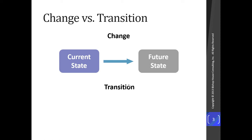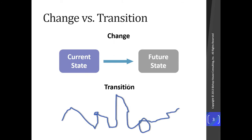When we talk about change, we're talking about moving from a current state to a new future state — it's very process-driven, often oriented with project management or training. Whereas when we talk about transition, it's much more emotional and not process-driven. We're talking about how people process and move through that change on a psychological level. Transition isn't linear; there are ups and downs, sometimes we go in circles, move forward and take steps back, or stall out a little bit.